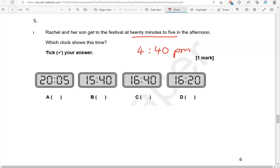The options that we have here are all in 24-hour format, so we're going to change this to 16:40. Because 4 add 12 gives us 16. So we add 12 when we convert to 24-hour format and the time is in the afternoon or evening. So 16:40, that's option C.